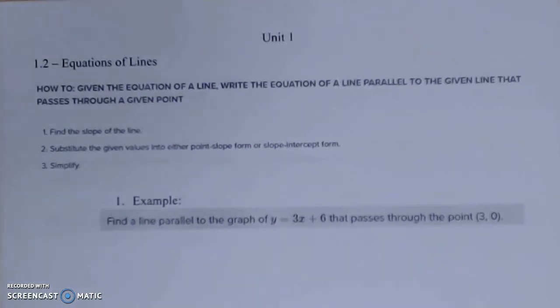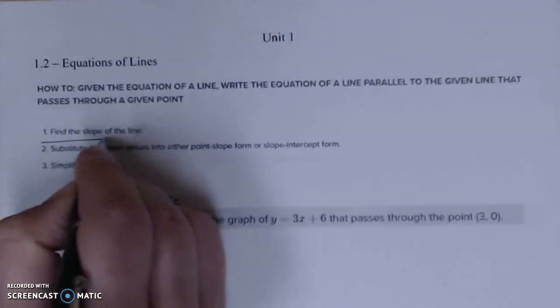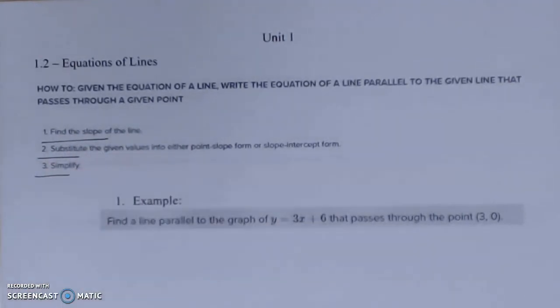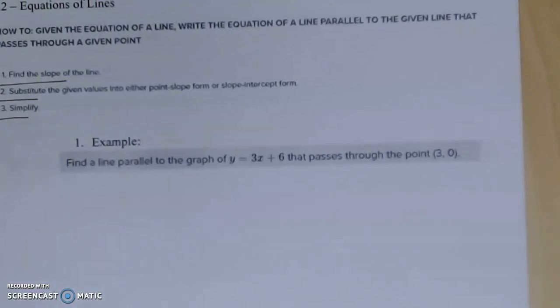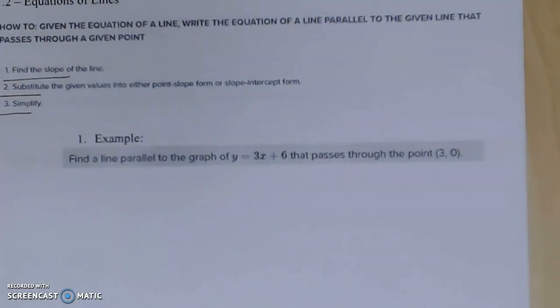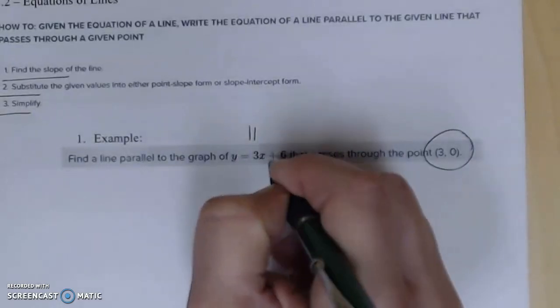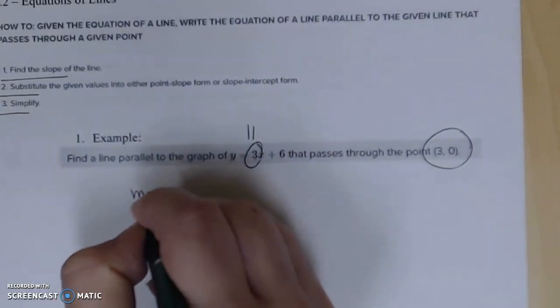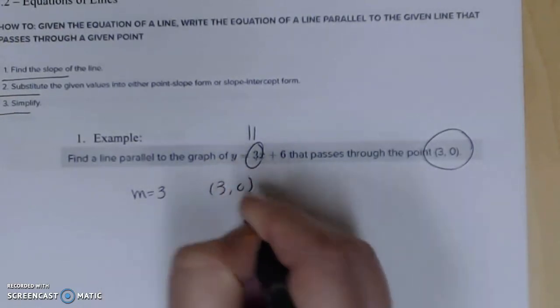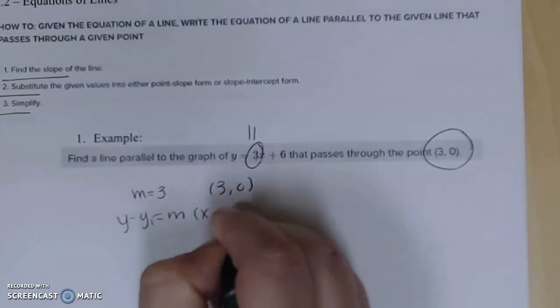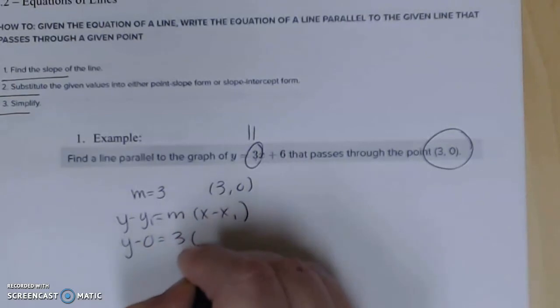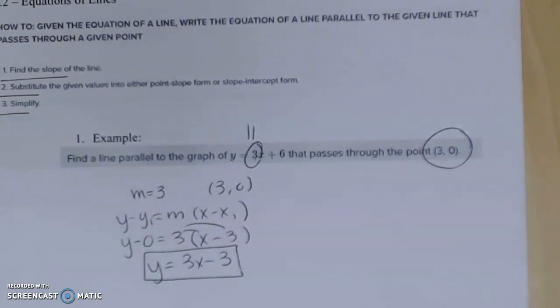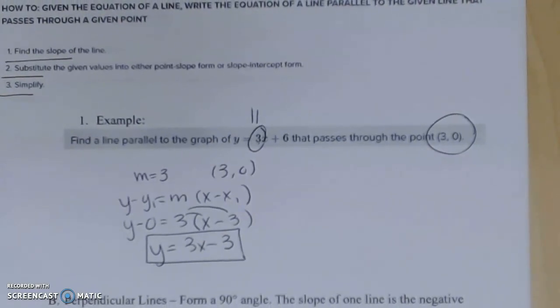If you want to find an equation of a line parallel to something given, you're going to identify the slope, substitute, and simplify. Find a line parallel to the graph of y equals 3x plus 6 that passes through point (3, 0). What do I need from this equation? I need that slope right there. If this slope is 3, my slope on my new line is going to be 3. Take that with your point (3, 0), use your point-slope form, and you'll be able to find the equation that is parallel and going through that point, which would be y equals 3x minus 3. Just adding in being able to identify the slope I need and then following the steps from previous problems.